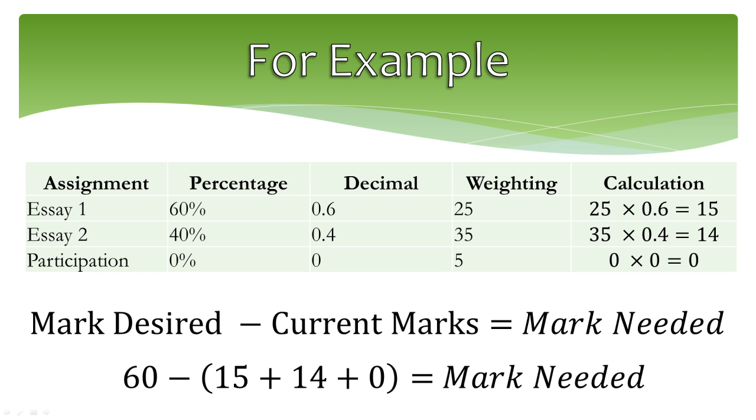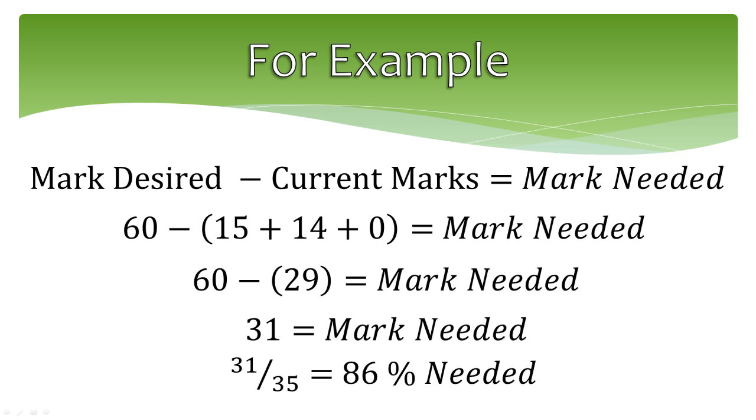Let's use 60 as a pass in the course, and we will put that number in the mark desired space. Then, we will enter the current marks. We will put them in brackets so we remember to calculate that first. Now, just follow the order of operations to calculate what you need to pass. Note that the number you get is not a percentage. It can be easily converted into a percentage by dividing by the weighting of what is left in the course.